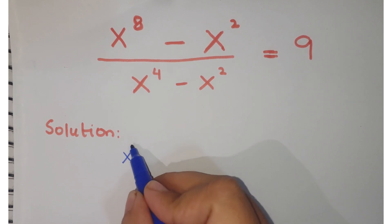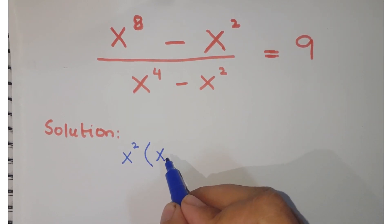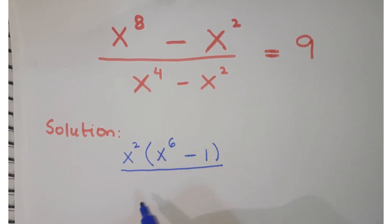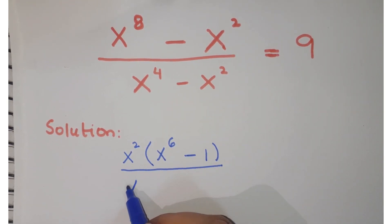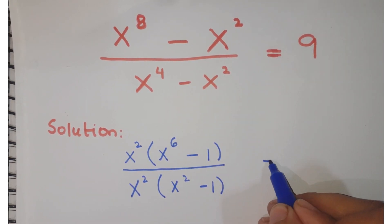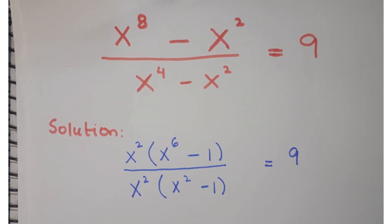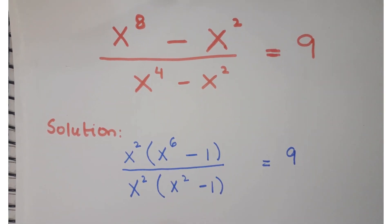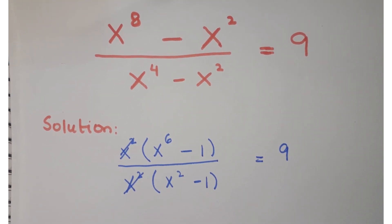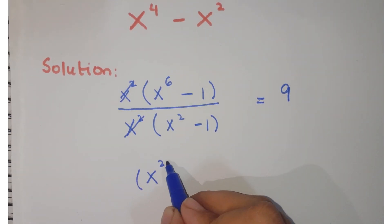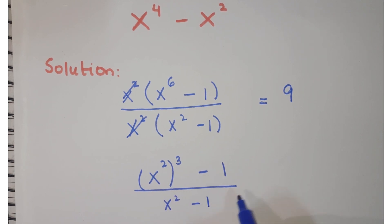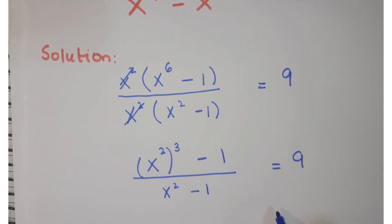First of all, you can take the common x to the power 2 in the numerator, so you are left with x to the power 6 minus 1. Similarly, in the denominator, take out x squared and you are left with x squared minus 1, equals to 9. Cancel this x squared and x squared, and then write x to the power 6 as x squared whole to the power 3, minus 1, upon x squared minus 1, equals to 9.